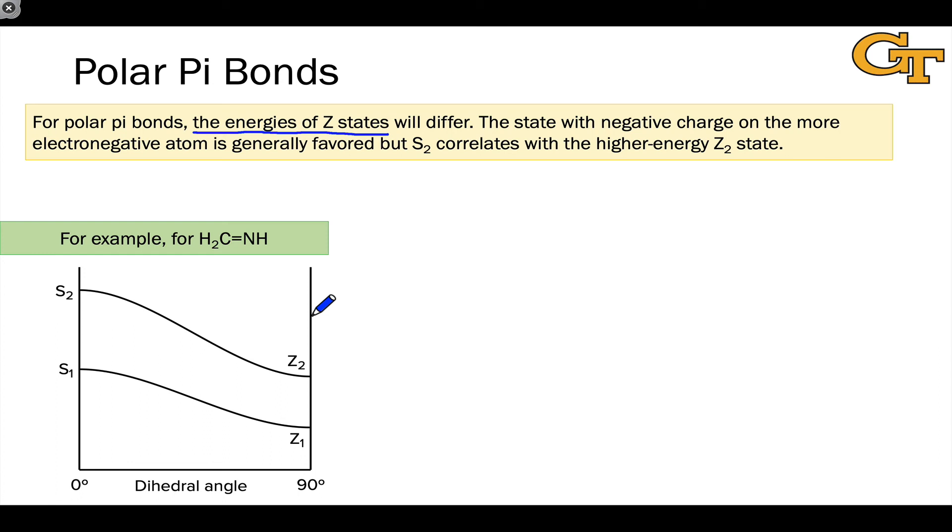Just as in the sigma bond case, we run into this problem that s2 correlates with the higher energy z2 state. It's not really a problem, it's just a fact of life. S2 is our pi star 2 state. So let's talk through why s2 correlates with the higher energy z2 state.